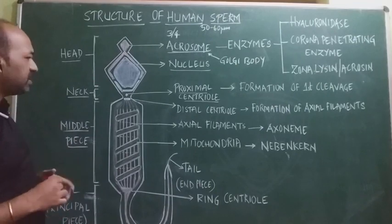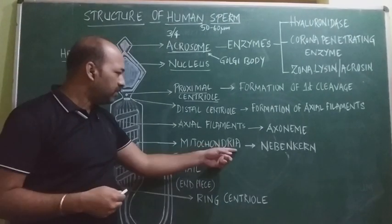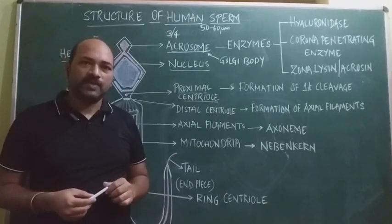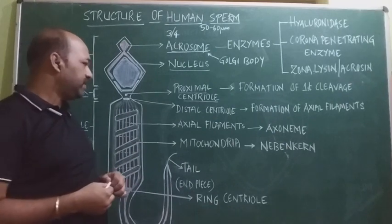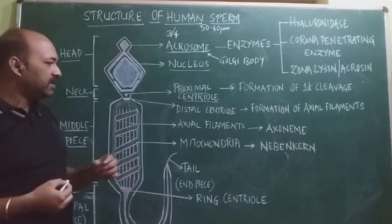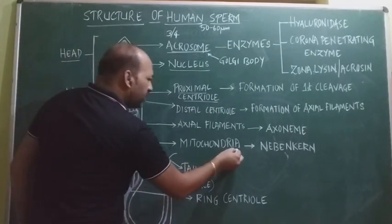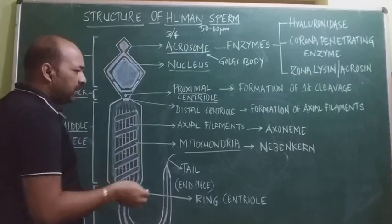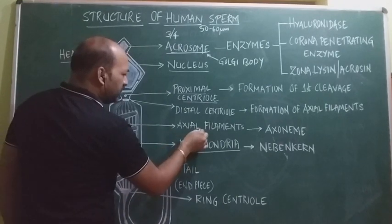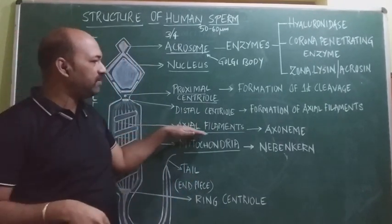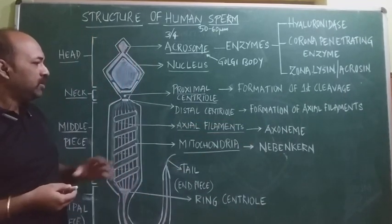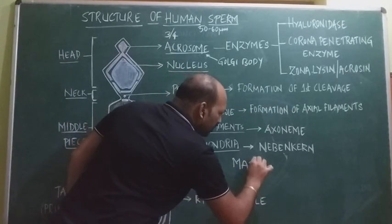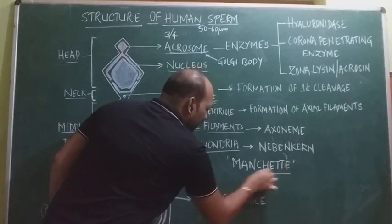The middle piece consists of mainly three parts. The first part is the mitochondria — known as the powerhouse of the cell because they generate energy. These mitochondria are 10 to 14 in number, spirally coiled, and surrounded by a mitochondrial sheath called the nebenkern. In addition to the mitochondria, there is a bundle of axial filaments collectively called the axoneme. Together, the axoneme and nebenkern are covered by another membrane called the manchette.